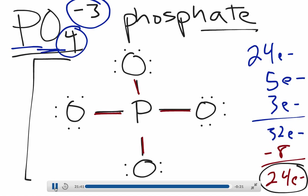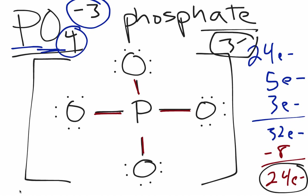Distributing the remaining 24 electrons — 6 to each of the 4 oxygens — gives every atom an octet. This shows how PO₄³⁻ forms as a stable polyatomic ion. We write the completed Lewis structure in brackets with the charge outside — that's how we properly represent the Lewis structure of a polyatomic ion.